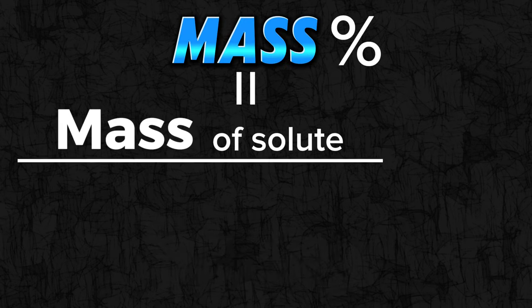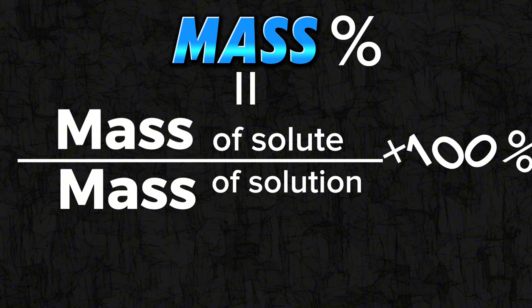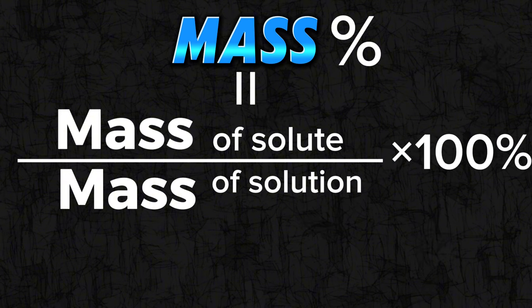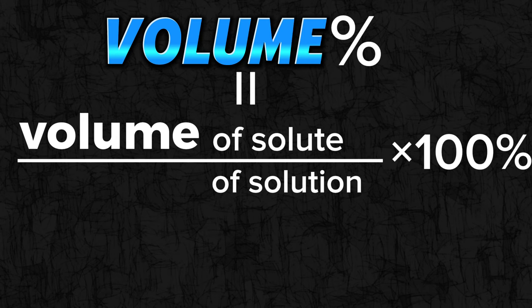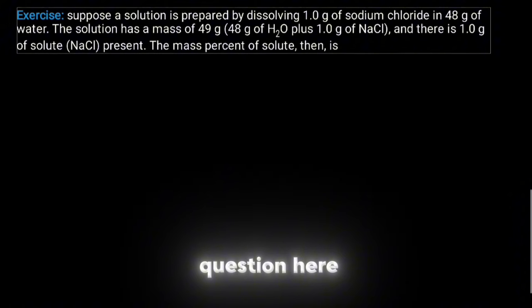The mass percent is equal to the mass of the solute divided by the mass of the solution multiplied by 100%. And the volume percent is equal to the volume of the solute divided by the volume of solution multiplied by 100%. Let's try this question here.